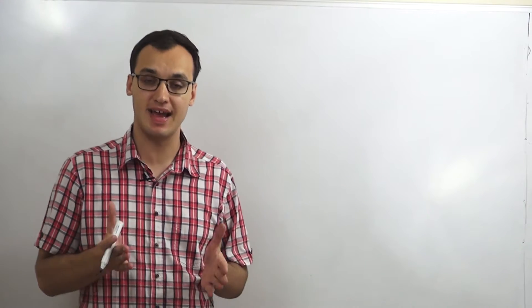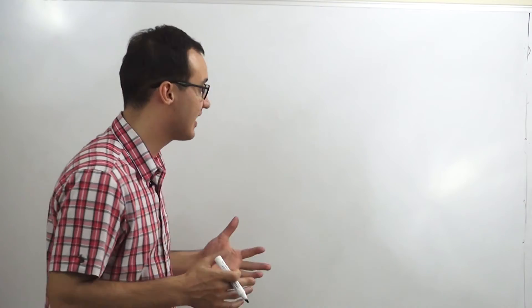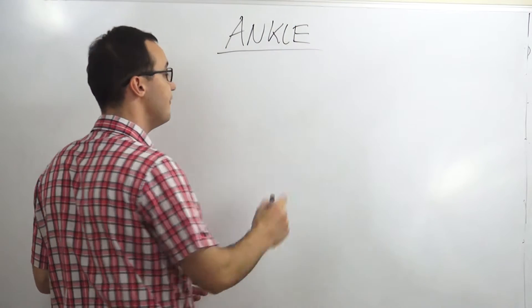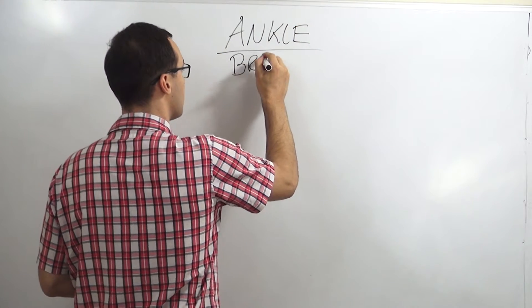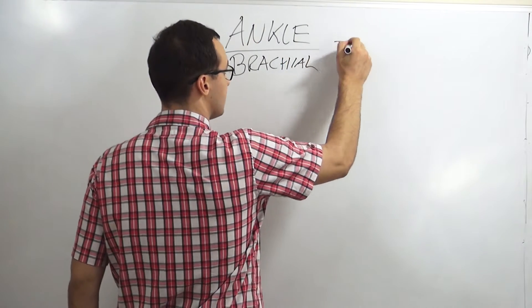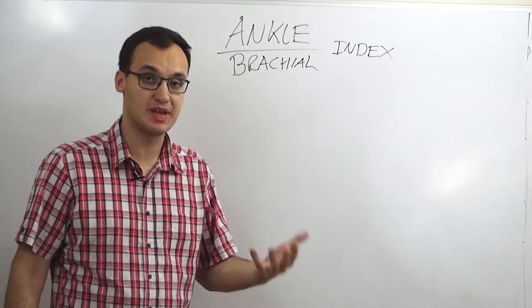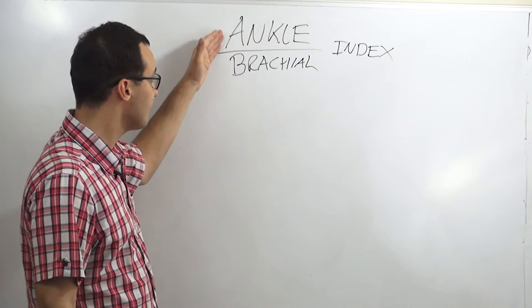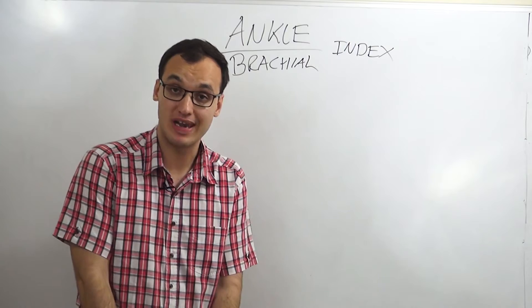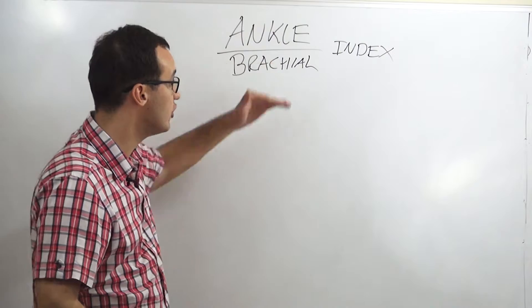Peripheral artery disease patients can be diagnosed with a system called the ankle brachial index. This is an index written as ankle divided by brachial, where ankle blood pressure is the blood pressure on your lower legs divided by the blood pressure on your upper arms. That gives you an index.